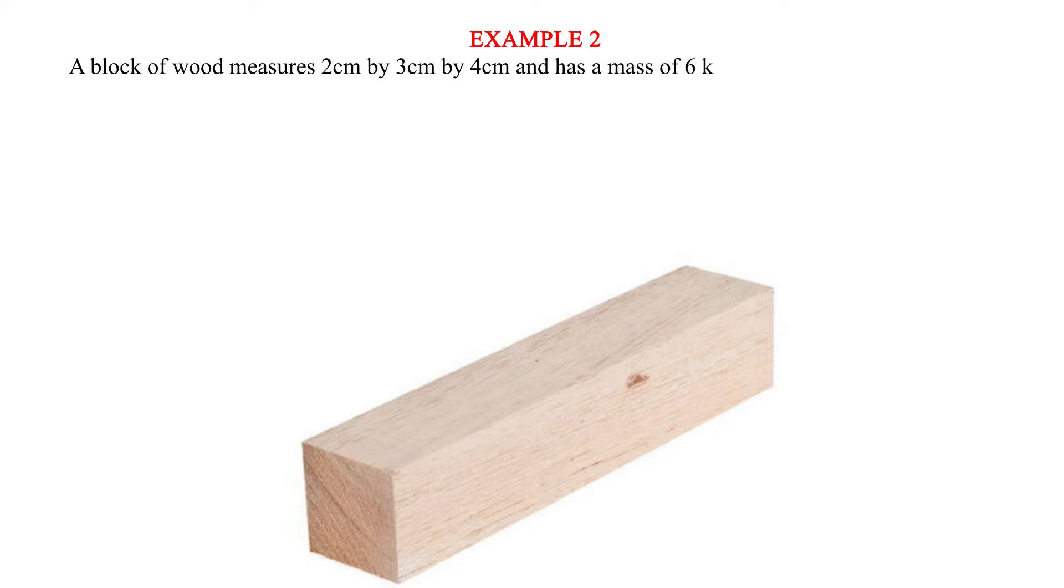Example 2. A block of wood measures 2 cm by 3 cm by 4 cm and has a mass of 6 kg. Calculate its pressure when A, area is minimum (maximum pressure), B, area is maximum (minimum pressure).